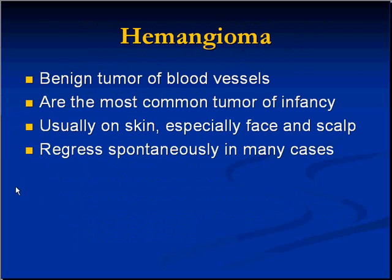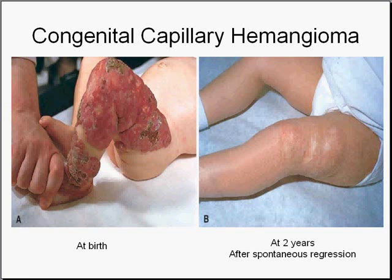Hemangiomas are birthmarks. Many hemangiomas, especially superficial ones near the skin, look red. Besides being the most common benign tumor of infancy, they're usually seen on the skin, especially the face and scalp, and they regress spontaneously in many cases. It is the rule, in fact, to have spontaneous regression within a couple of years. My daughter had a little hemangioma on her face and the plastic surgeon helped by zapping it with a laser, but he may not have needed to do very much.